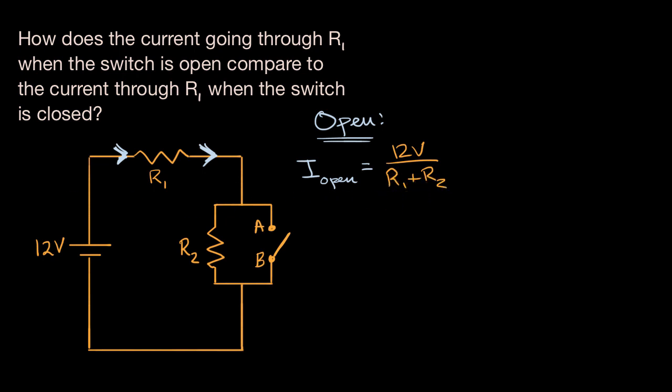Now let's think about the situation where the switch is closed. So here, our current at this point of our circuit, or the current going through R1, I sub closed, is once again going to be equal to 12 volts, the voltage across the resistors. But what are we going to divide by now? When we close this switch, what happens?